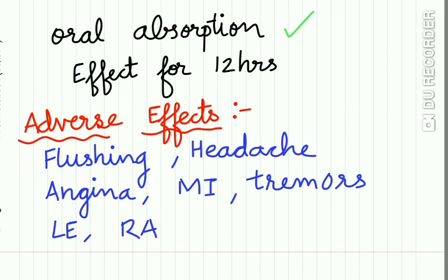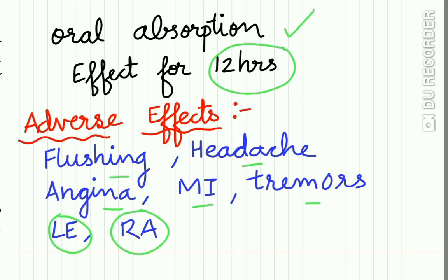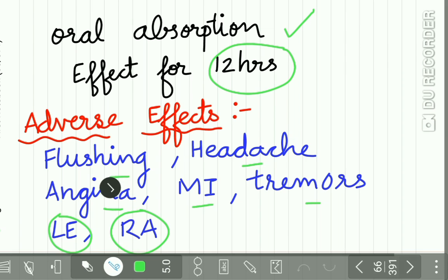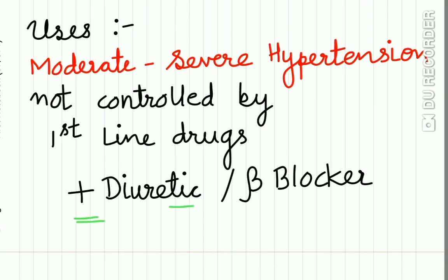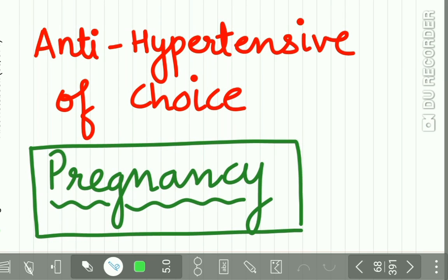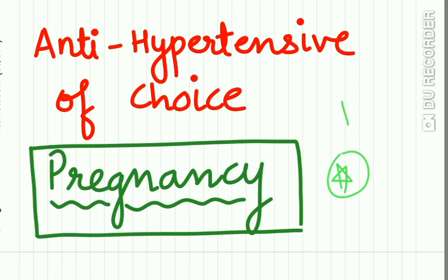Oral absorption of hydralazine is satisfactory and effect lasts for 12 hours. Adverse effects include flushing, headache, angina, MI, tremors, lupus erythematosus-like reaction, and rheumatoid arthritis. It is used in moderate to severe hypertension not controlled by first-line drugs, given in combination with a diuretic or beta blocker. Importantly, hydralazine is the anti-hypertensive of choice in pregnancy — frequently asked in MCQ exams.